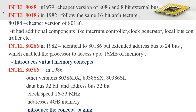The Intel 80386 came in various versions including the 80386 DX, 80386 SX, and 80386 SL. It had a 32-bit data bus and a 32-bit address bus. Using the 32-bit address bus — 2 raised to 2 times 2 raised to 30, where 2 raised to 30 equals 1 GB — it can address 4 GB of main memory. It was a 32-bit processor and introduced the important concept of paging.